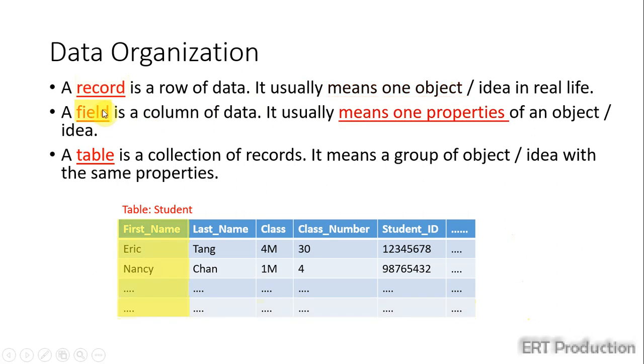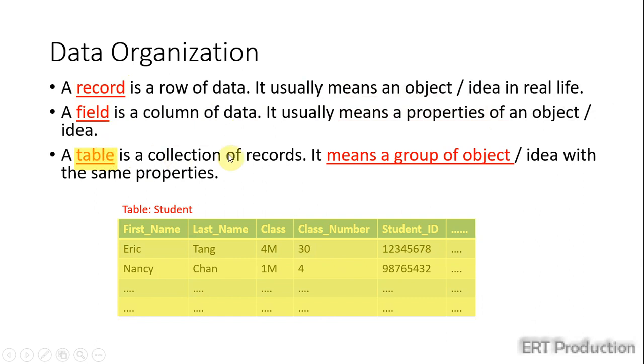A field is a column of data. It usually means a property of an object or idea. A table is a collection of records. It usually means a group of objects or ideas with the same properties.